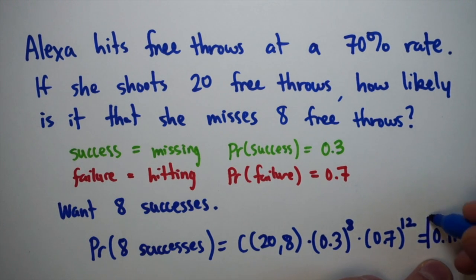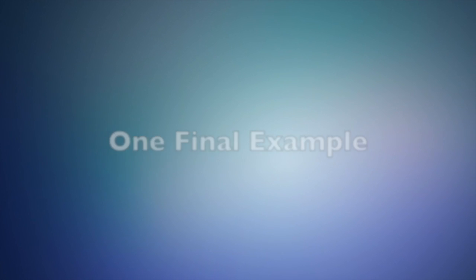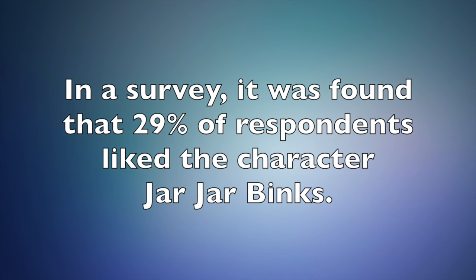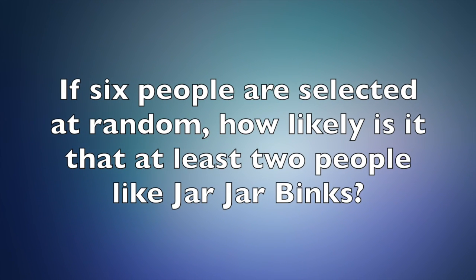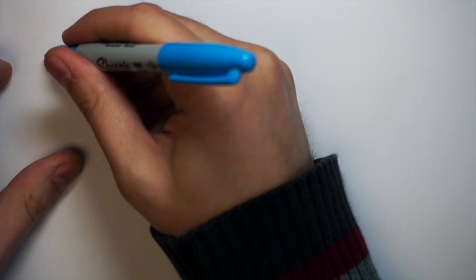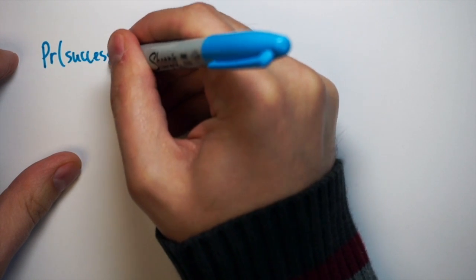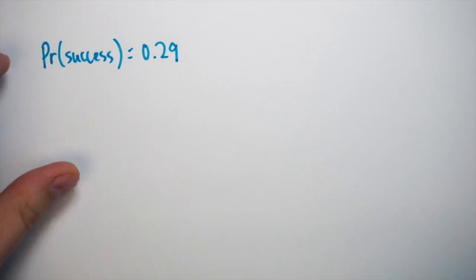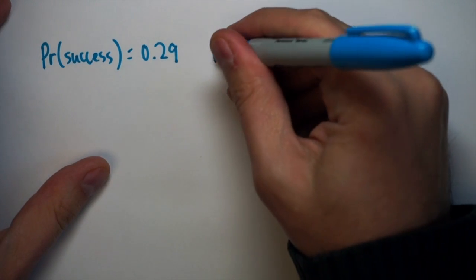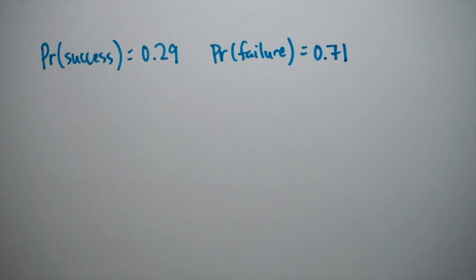Our last example is a bit more complicated. In a survey it's found that 29% of respondents liked the character Jar Jar Binks from Star Wars Episode One. If six people are selected at random, how likely is it that at least two people like Jar Jar Binks? Success is a person liking Jar Jar, so the probability of success is 0.29 and the probability of failure is 0.71 (one minus 0.29).